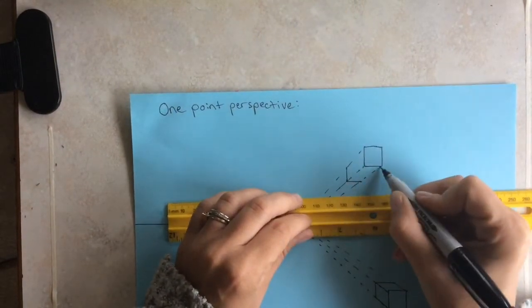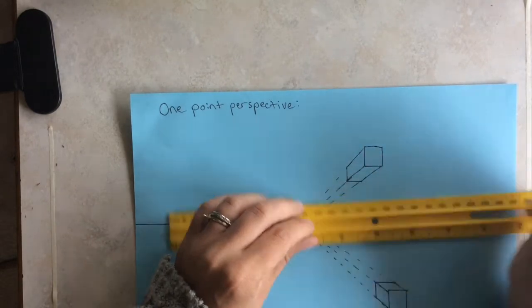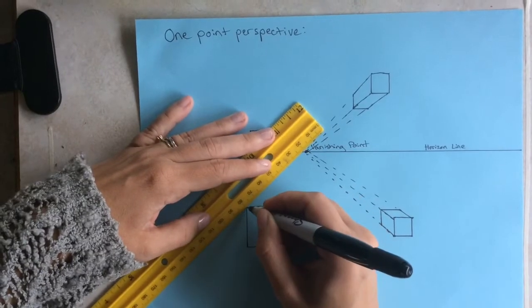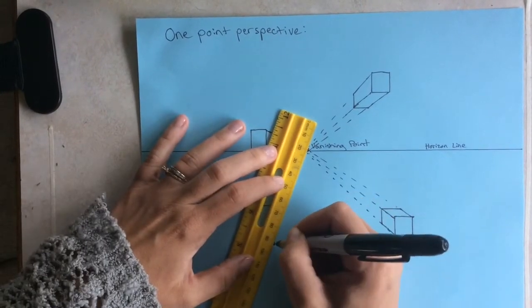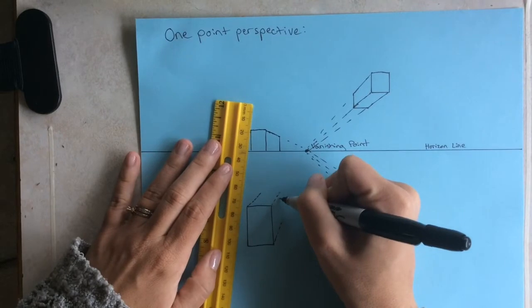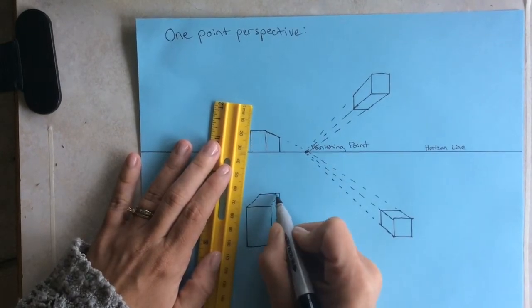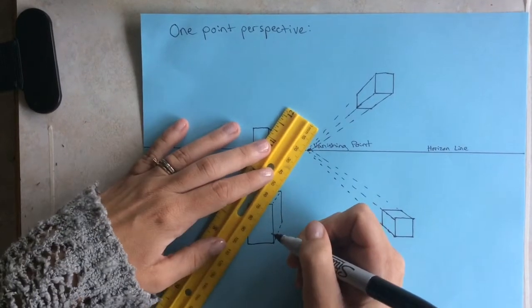So, then you're going to line up the lines, connect them, make sure everything is parallel. Fun, you can make a little cafe, dining area.